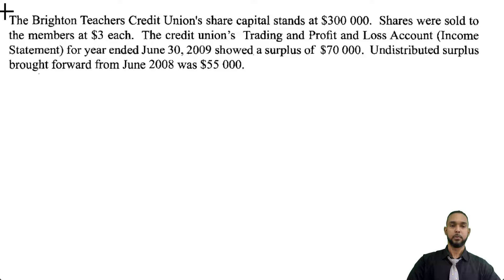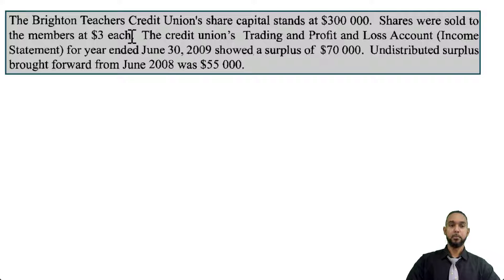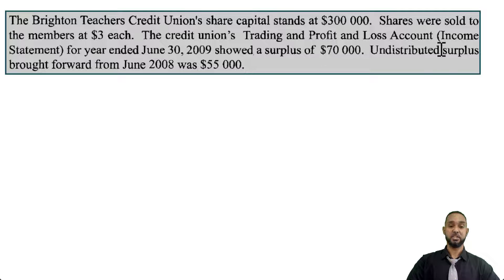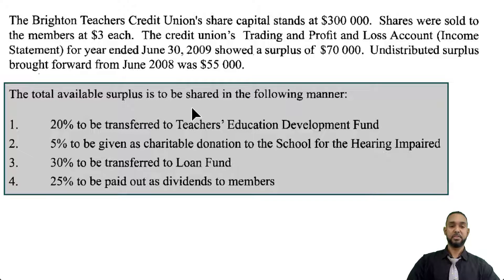For part C, the Brighton Teachers Credit Union's share capital stands at $300,000. Shares were sold to members at $3 each, which means they sold 100,000 shares — 100,000 × $3 gives $300,000. The credit union's income statement for the year ended June 30th, 2009 showed a surplus of $70,000. The undistributed surplus brought forward from June 2008 was $55,000 — that's their version of retained earnings. The total available surplus is to be shared in the following manner.